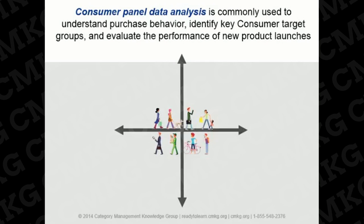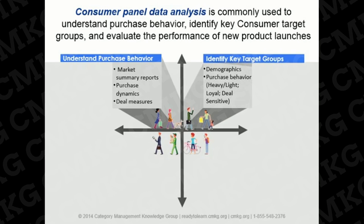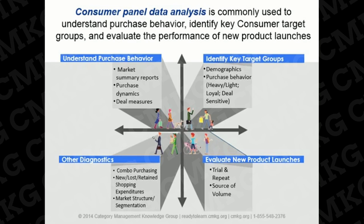The most common types of analysis that can be done with household panel data can be classified in four main categories: understanding basic purchase behavior through market summary reports, purchase dynamics, and deal measures; identifying key target groups through demographics and purchase behavior; evaluating new product introductions through trial and repeat and source of volume analysis. There are other diagnostics available, including combination purchasing, new or lost and retained buyer flow analysis, shopping expenditures, and market structure and segmentation studies.